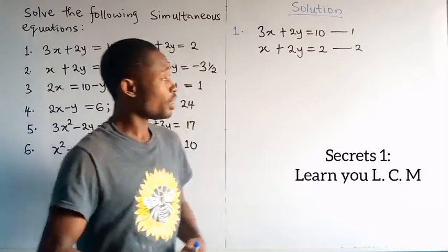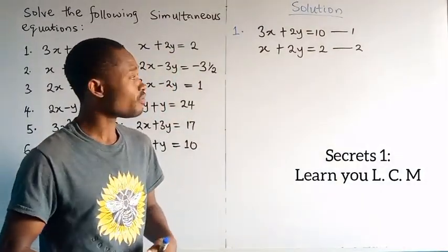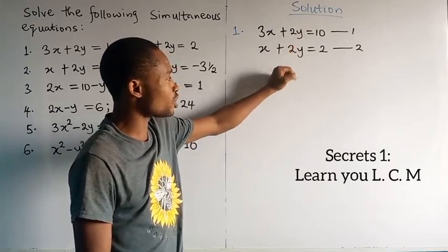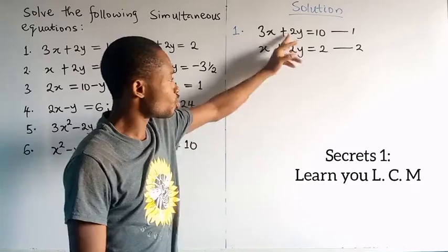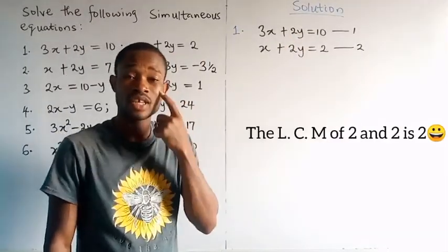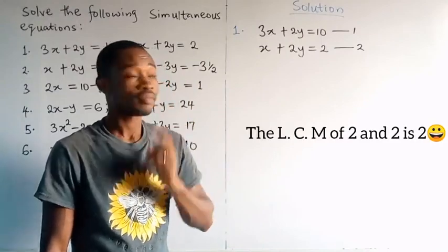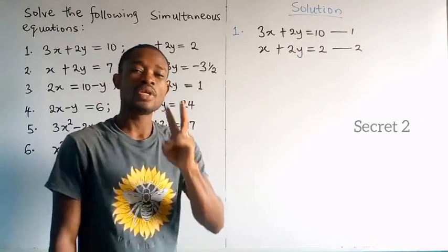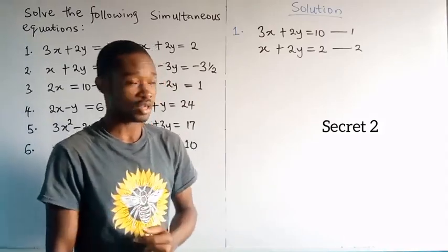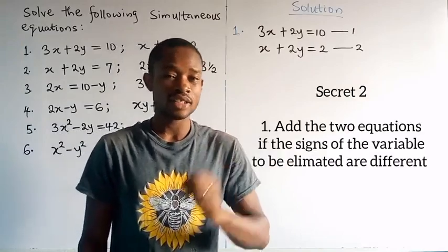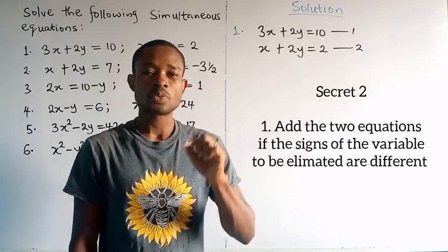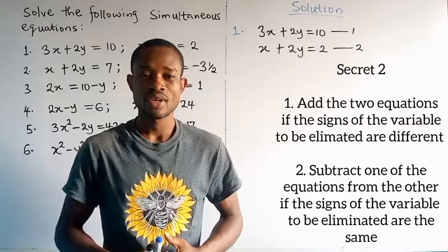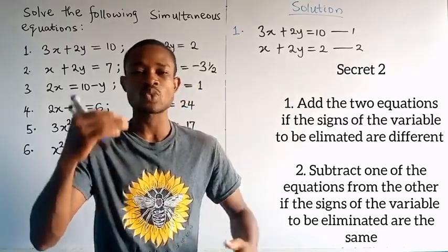You need LCM to deal with problems like simultaneous equations in order to eliminate a particular variable. In question one, you observe that y in equation 1 and y in equation 2 have the same coefficient — both are 2. So here we don't need to find the LCM; we can go straight to eliminate. The question then is: what do I do to eliminate? You either add the two equations or subtract one from the other.